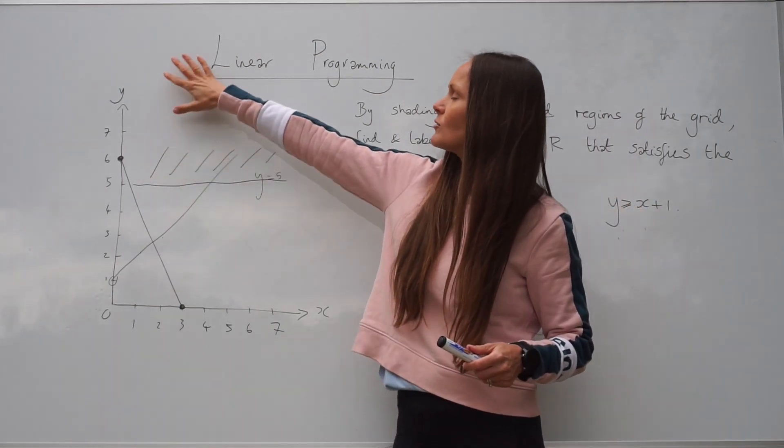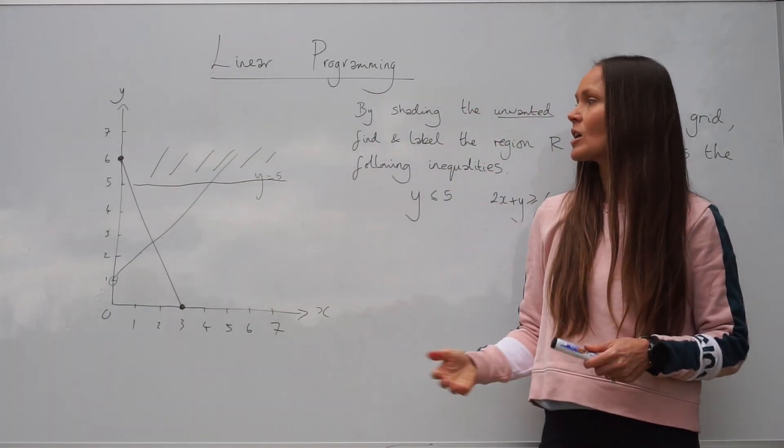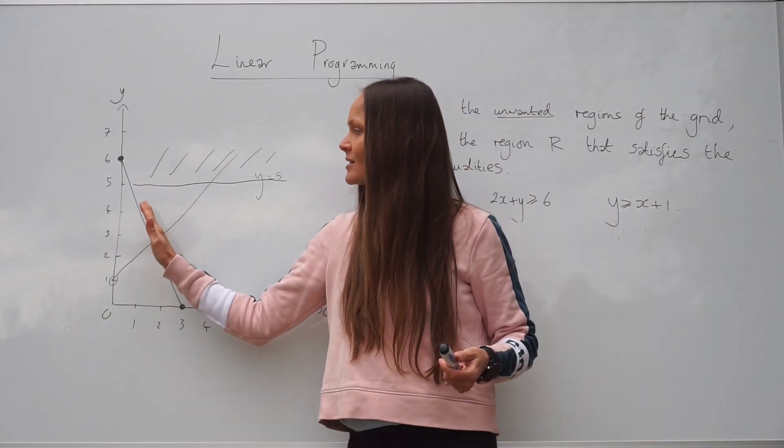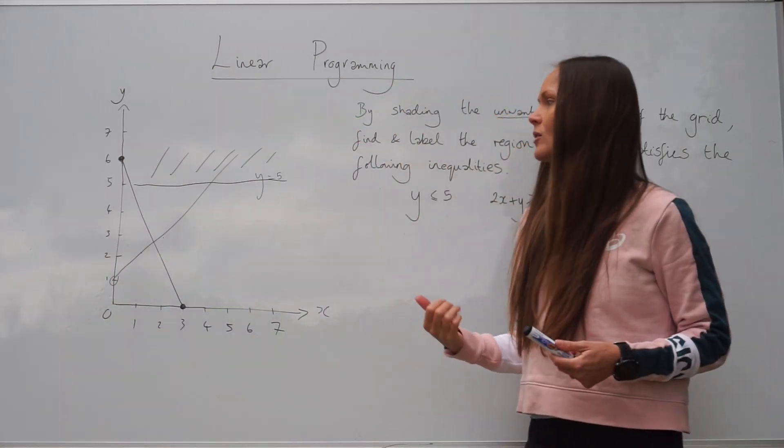All the y values get greater here, x values here. So that is the side that we need. So if you're shading the unwanted region, you would shade underneath the graph, because that's when all the coordinates get smaller. So that's just a logical way of looking at the question.